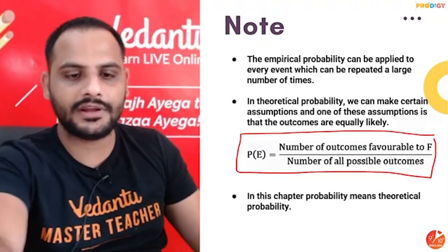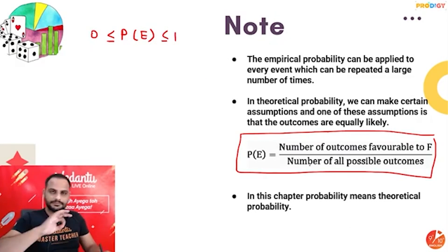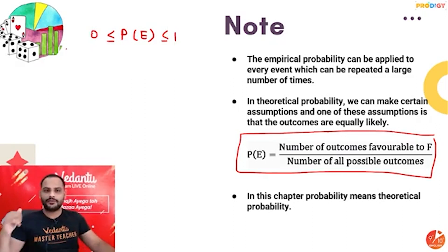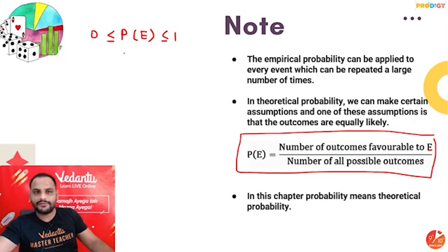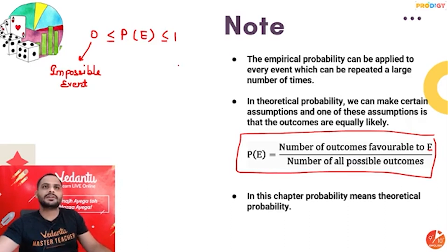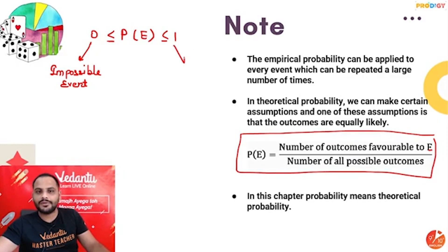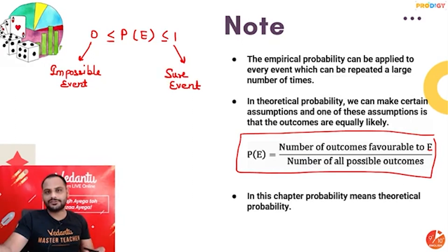The probability of any event will always be from 0 to 1. Why will it be 0? If there is no outcome favorable to the event, the numerator becomes 0. Remember: if probability of any event is 0, that is an impossible event — it can never happen. For example, getting 7 while throwing a dice — the numbers on the dice are only 1 to 6, so you will never get 7.